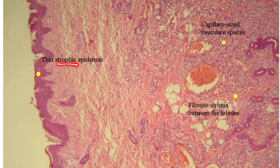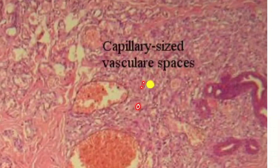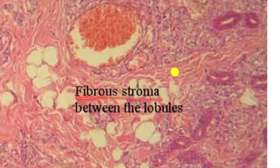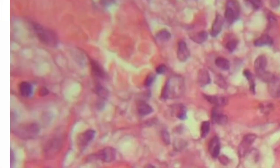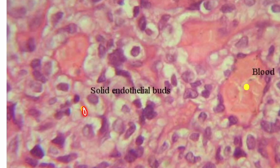Next, here you can see the small septa with capillary-sized vascular spaces. There is also fibrous stroma between the lobules. And here you can see the solid endothelial buds. This is capillary hemangioma.